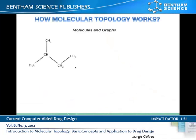A graph is a set of points called vertices connected by segments called edges. Molecules, particularly the organic ones, can be represented as graphs. In the figure we have the corresponding graph for isopentane. Once we have the graph, we can represent it by a matrix called the topological matrix, which is obtained as follows.